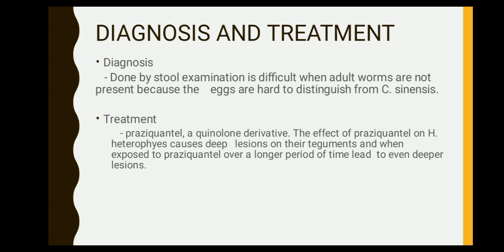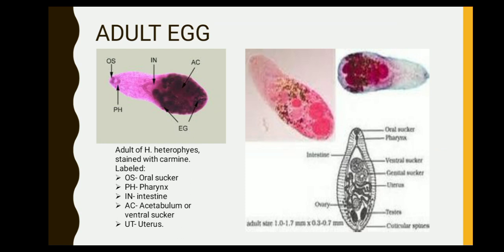Regarding diagnosis and treatment: stool examination is difficult when the adult worm is not present because the eggs are hard to distinguish. Treatment uses Praziquantel, a quinolone derivative. The effect of Praziquantel on Heterophyes causes depletion of their pigment, and when exposed over a longer period of time, it leads to deeper lesions. This image shows an adult egg of Heterophyes.